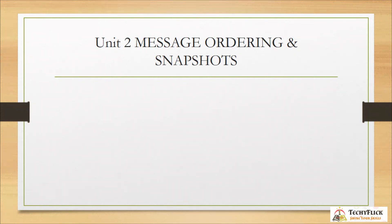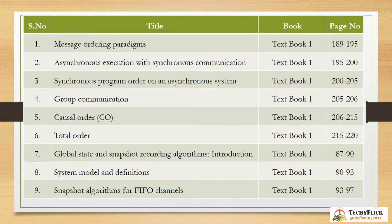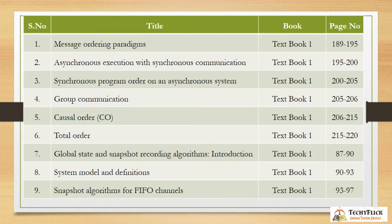Unit 2 is Message Ordering and Snapshots. Message Ordering Paradigms, pages 189 to 195. Asynchronous Execution with Synchronous Communication, pages 195 to 200. Synchronous Program Order on an Asynchronous System, pages 200 to 205. Group Communication, pages 205 to 206. Causal Order (CO), pages 206 to 215. Total Order, pages 215 to 220. Global State and Snapshot Recording Algorithms — Introduction pages 87 to 90, System Model and Definitions pages 90 to 93, Snapshot Algorithms for FIFO Channels pages 93 to 97.